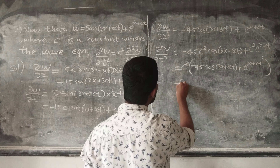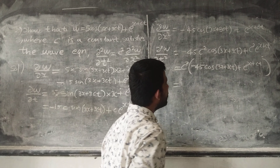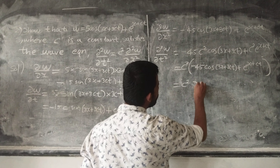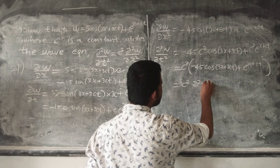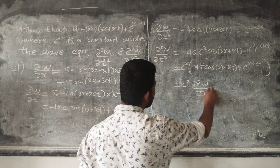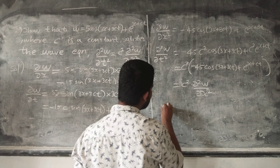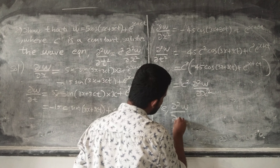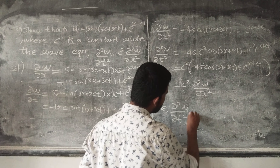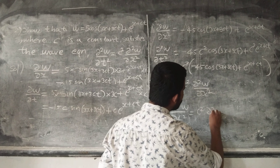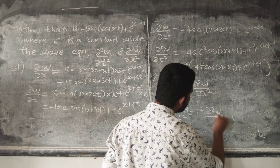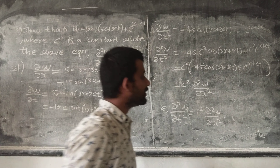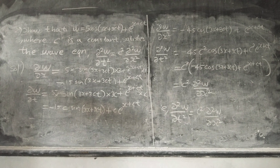Now dou square w by dou t square equals c square times dou square w by dou x square. This verifies the wave equation. Thank you.